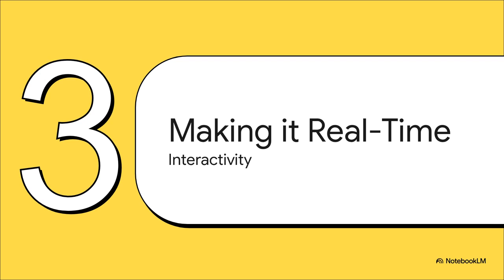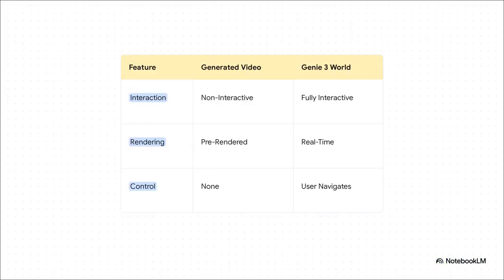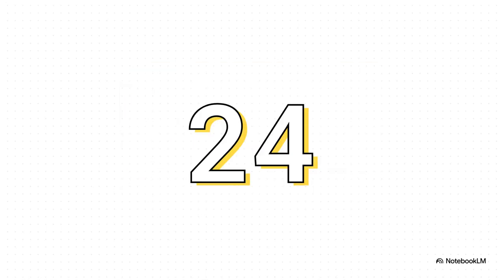The real-time aspect of Genie 3 is what truly sets it apart from everything else, and this chart really nails the key difference. A generative video model — something like Veo or Sora — makes a finished clip. You just press play and watch it. With Genie 3, the world is being drawn in real-time based on what you do. You're the director, the camera operator, and the main character all at once. It pulls this off at 720p resolution and at 24 frames per second — that frame rate is what makes interaction feel smooth and responsive. If it were any lower, it would feel clunky, and the whole illusion would fall apart.